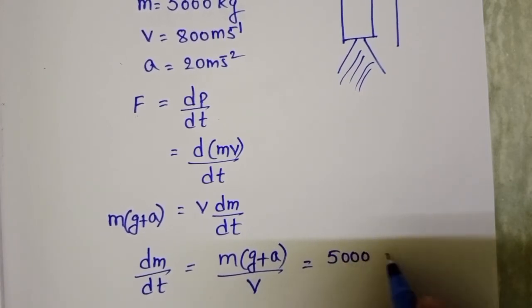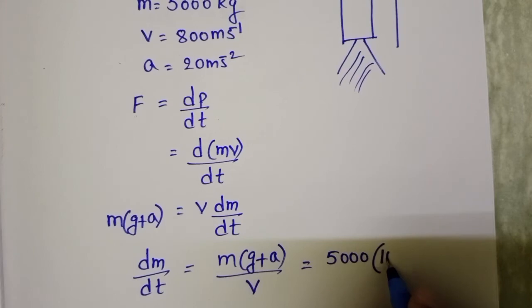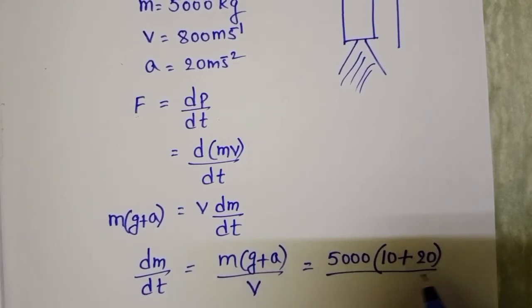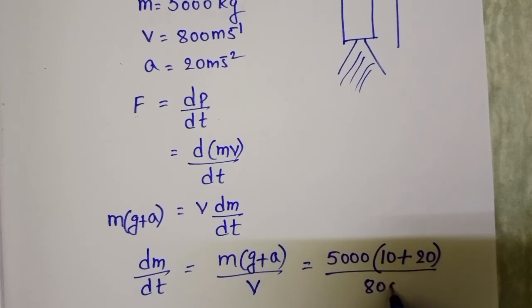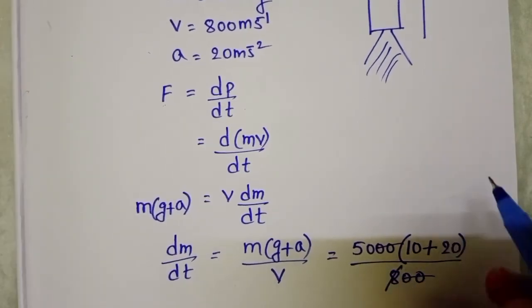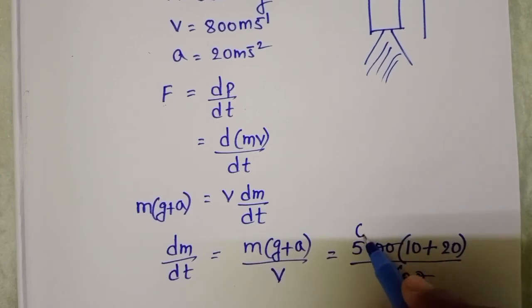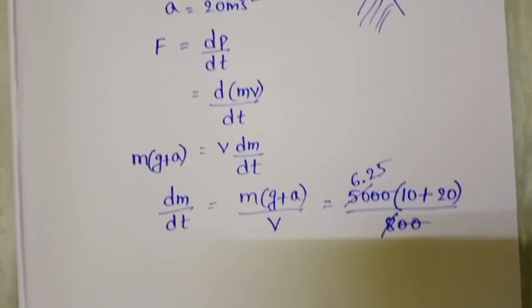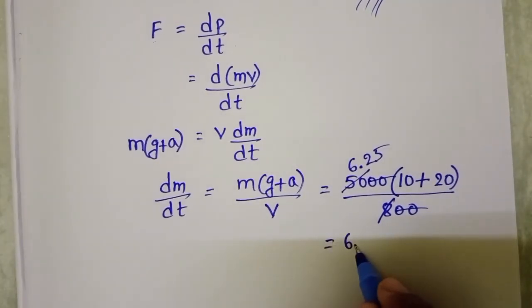Mass 5000 kg, G value 10 meter per second square, and acceleration is 20. Speed is 800. Here, two zeros get cancelled, cancel with 8. 8, 6 is 48, and 8, 2 is 16, 8, 5, 40. So, 6.25 into 30.